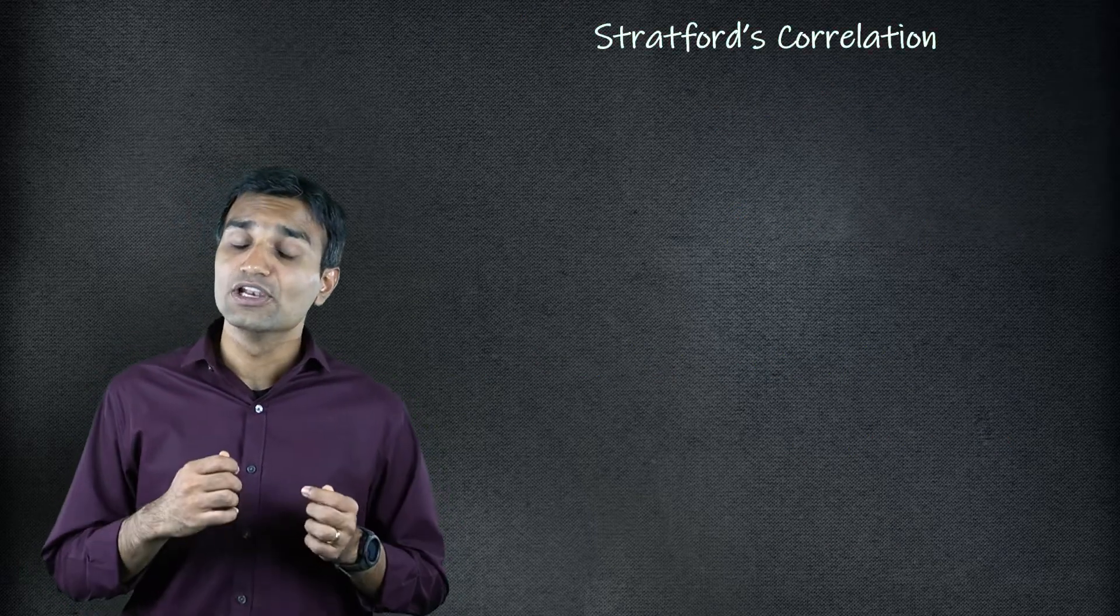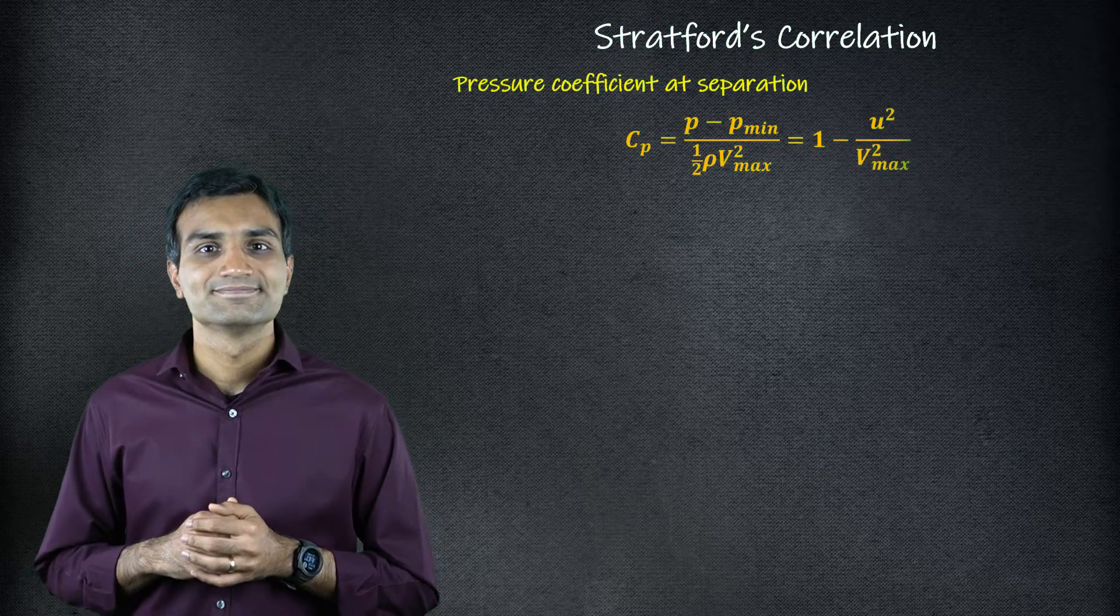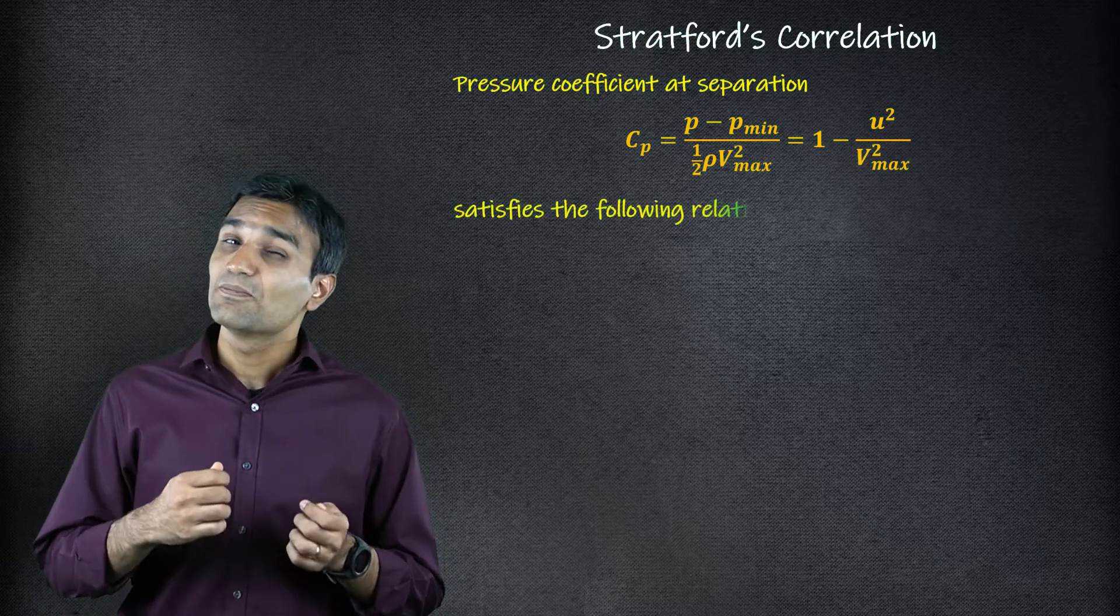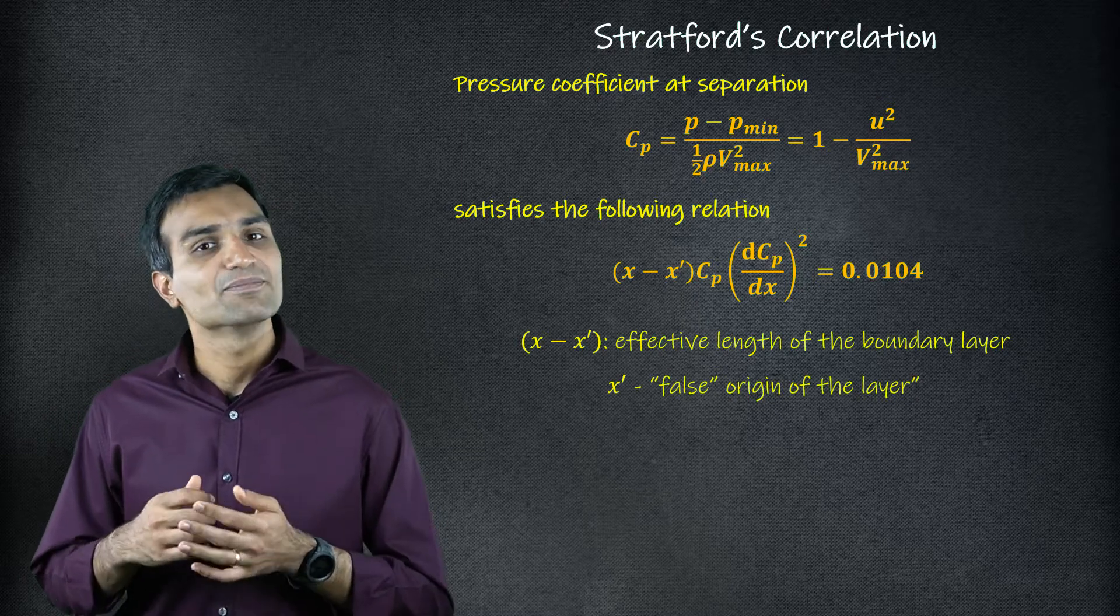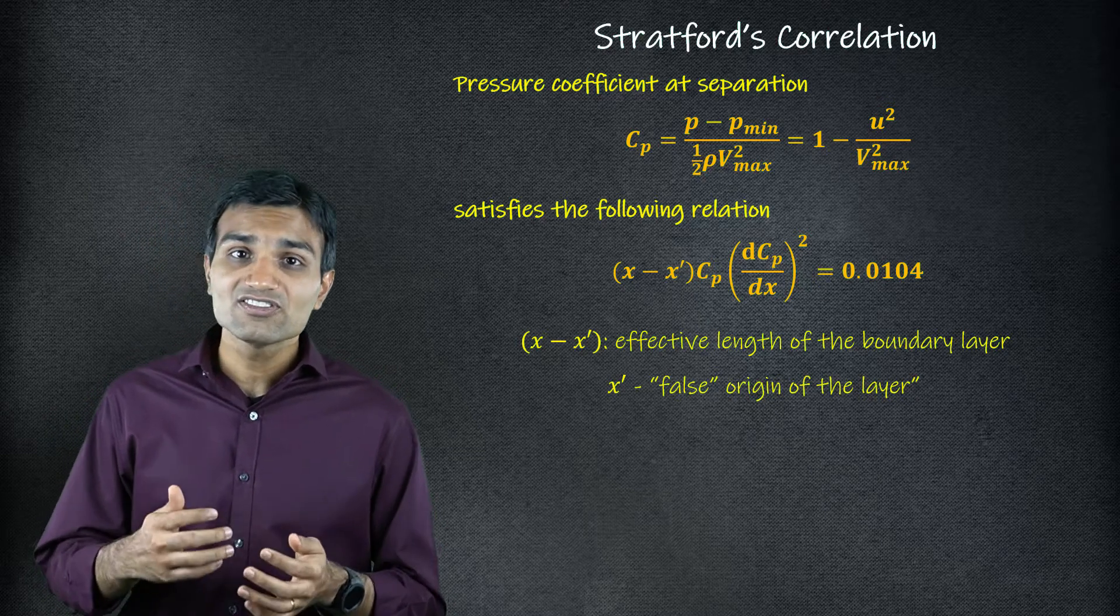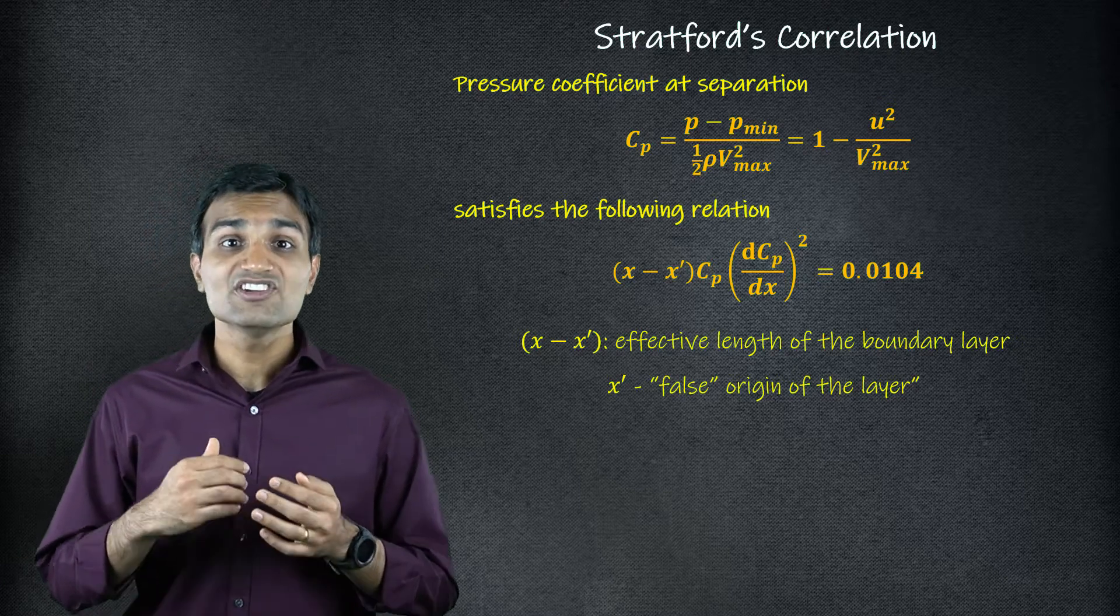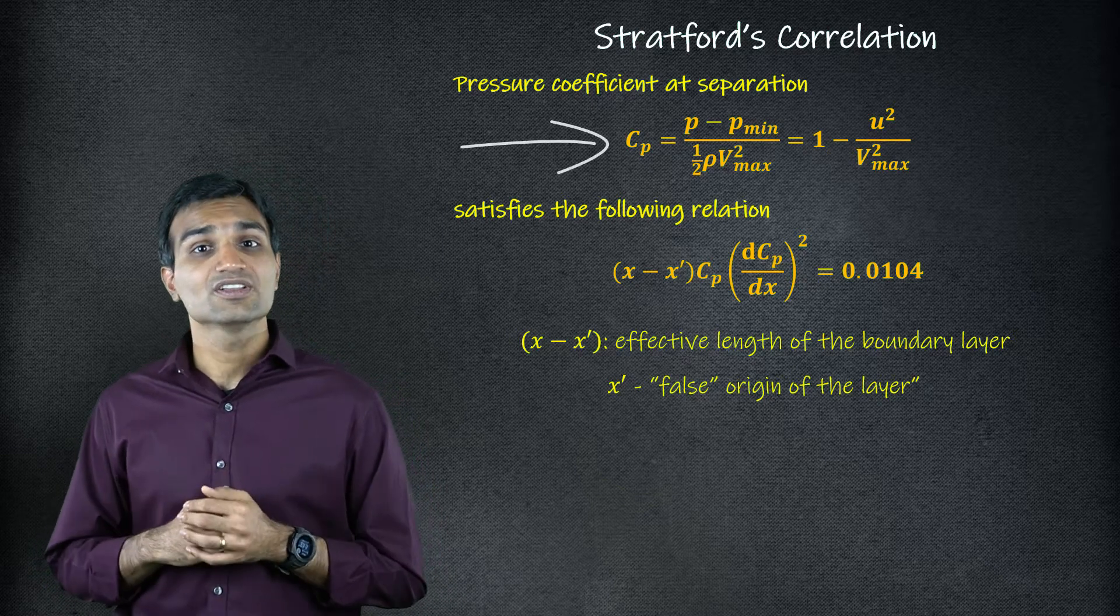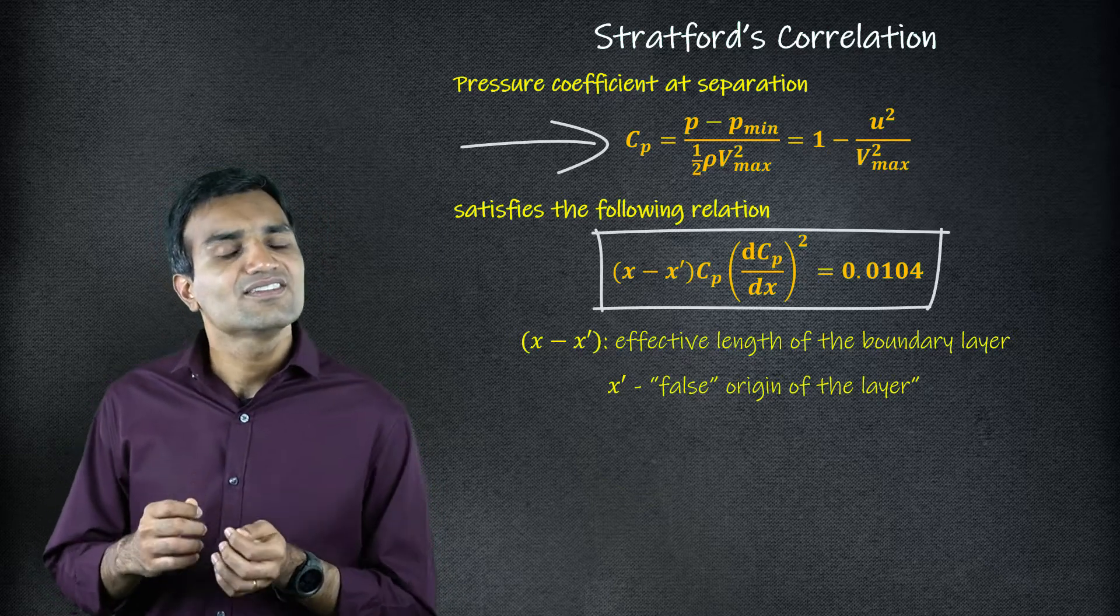Stratford obtained a more accurate estimation of the location of the separation point for laminar flows. His analysis is based on the fact that pressure should be minimum where flow velocity is maximum. He matched the velocities between the inner and the outer layers of the separation region to show that the coefficient of separation, which is defined as follows, satisfies this relation.